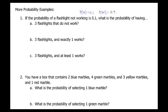So the probability of three flashlights where none of them work: not working, not working, not working. We do the same thing as flipping a coin three times and getting three heads — half times half times half. So P(none work) = 0.1 × 0.1 × 0.1 = 0.001, if the probability that any single one doesn't work is 0.1.